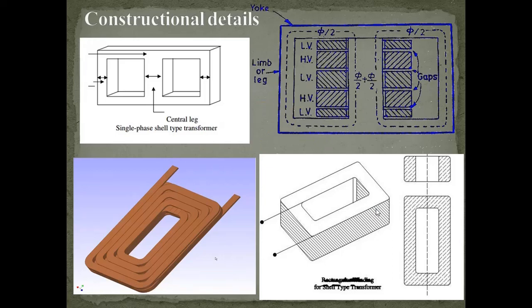Before going with an example, let us brief about construction details of shell type transformer. This is a single phase shell type transformer. You can see here the width of the central limb is twice the width of the side limbs — this is your core. In this core we have a central limb and outer limbs. The horizontal portion is called yoke and the vertical portion is called limb or leg.